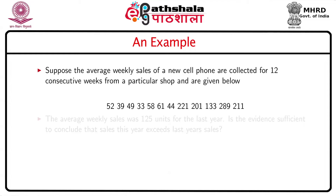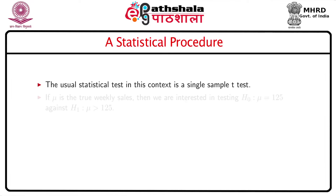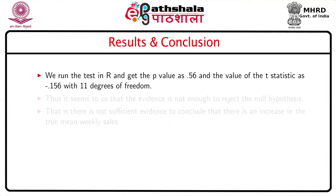There are 12 sales figures and the average weekly sales was 125 units for the last year. It is of interest to know whether the current year sales exceed the last year sales. This can be stated as a statistical hypothesis: if mu is the true weekly sales, we are interested in testing the null hypothesis mu equal to 125 against the alternative mu greater than 125. Assuming normality of the data, the usual test is a single-sample t-test. Running the R code, we get a p-value of 0.56, a t-statistic of minus 0.156, and 11 degrees of freedom.